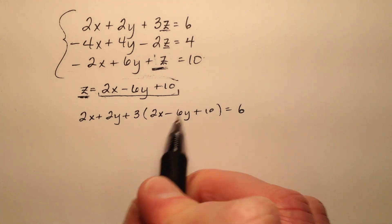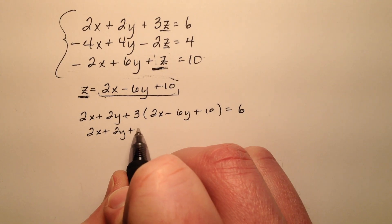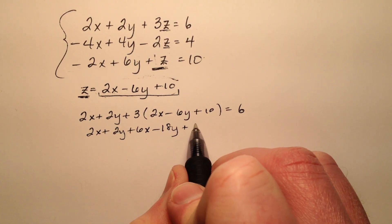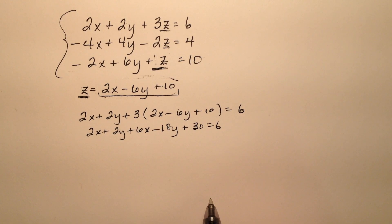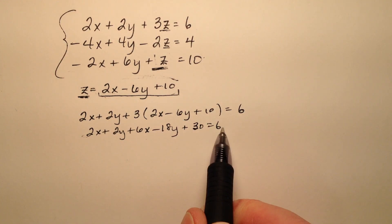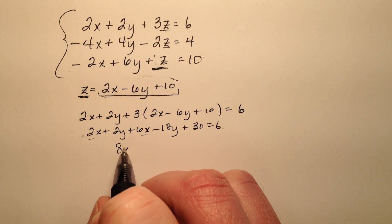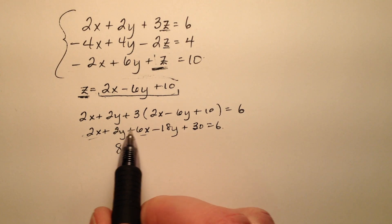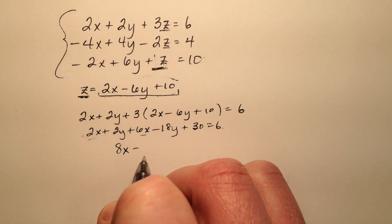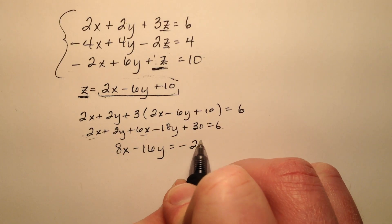Let's go ahead and just simplify this a little bit. 2x plus 2y plus 6x minus 18y plus 30 equals 6. Now it's a matter of combining like terms and subtracting 30 from both sides. So the 2x and the 6x will make 8x, and 2y minus 18y will be negative 16y, and that's going to equal negative 24.